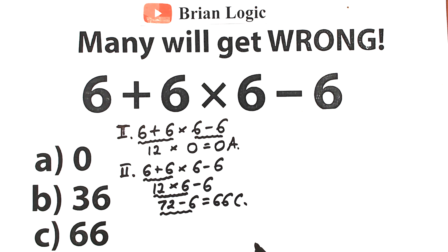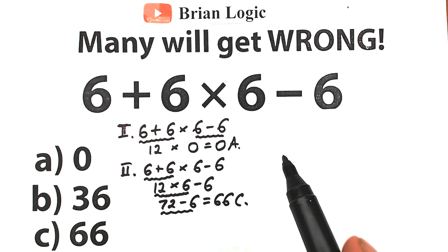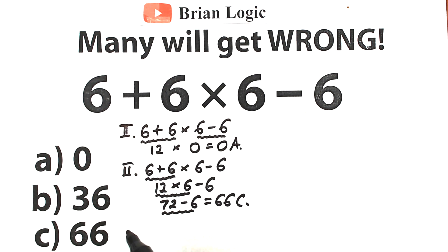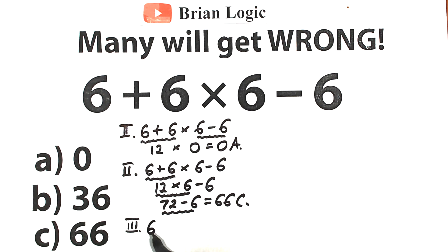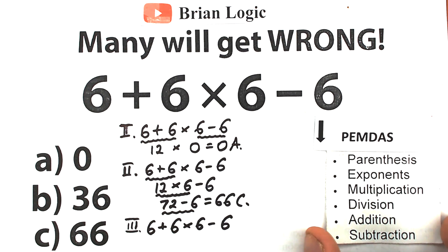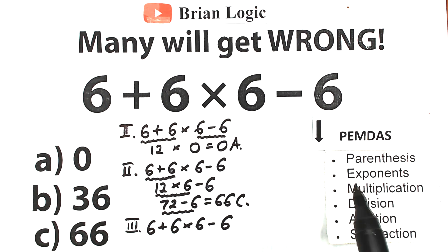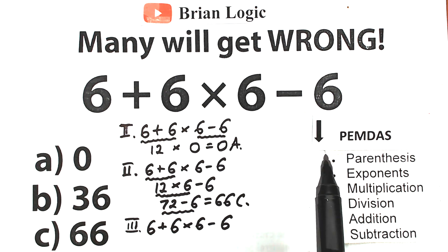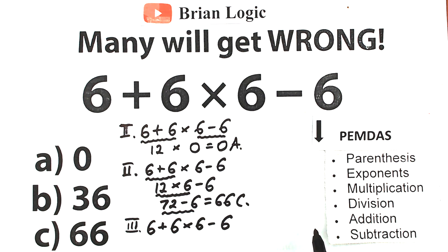But there is a third type of people. They know about order of operations and how to solve this correctly, step by step. The order of operations — PEMDAS — means: first evaluate parentheses (highest priority), then exponents, then multiplication and division, and then addition and subtraction.